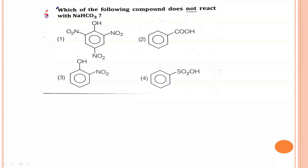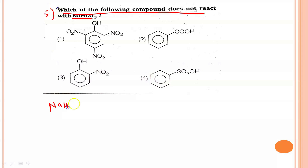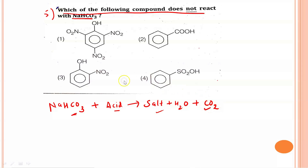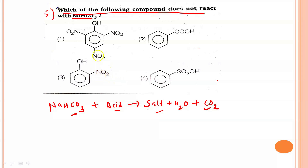The last question says: which of the following compounds does not react with NaHCO3? When sodium hydrogen carbonate, a weak base, reacts with an acid, it forms salt, water, and effervescence of carbon dioxide. Looking at the options, this question can be solved based on acidic strength.